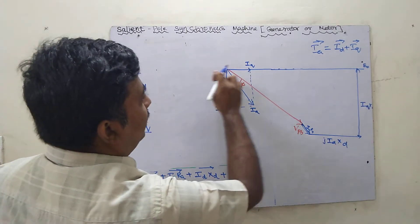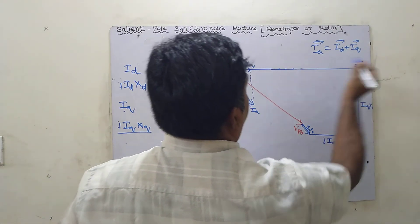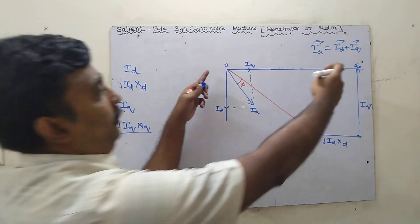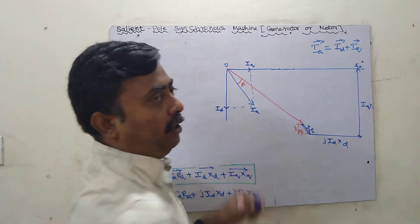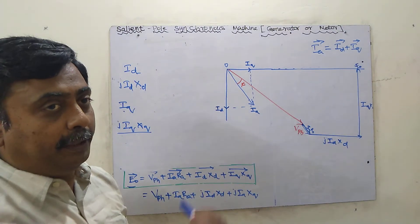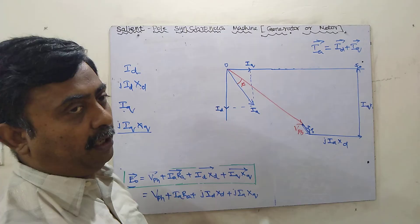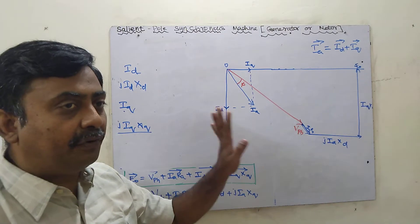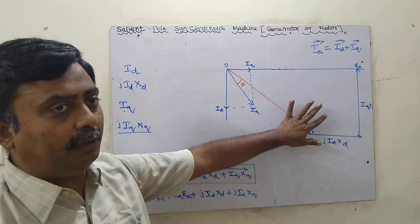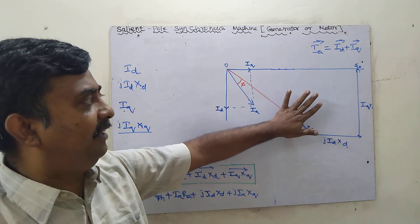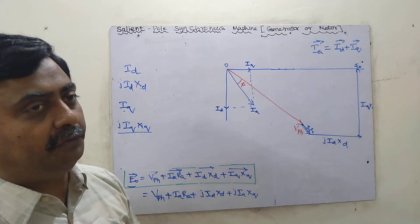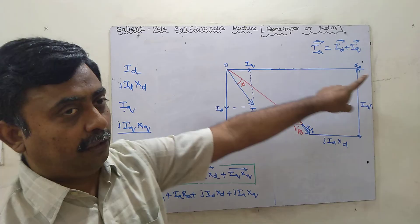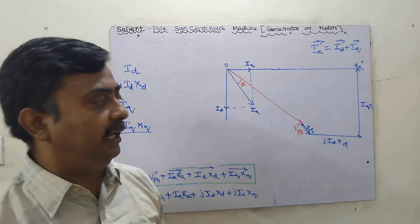The resultant phasor from the origin is called E0 — the no-load voltage. This is what we have to find. The angle between E0 and V-phase is called the load angle delta. The angle between E0 and the armature current IA is called psi. We cannot directly calculate these using simple formulae because these angles are not known quantities beforehand.